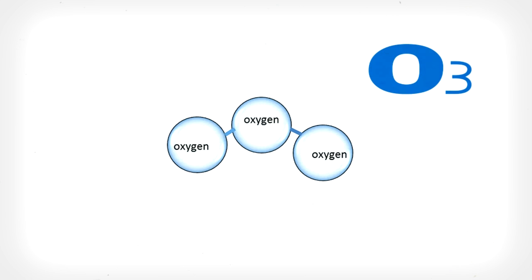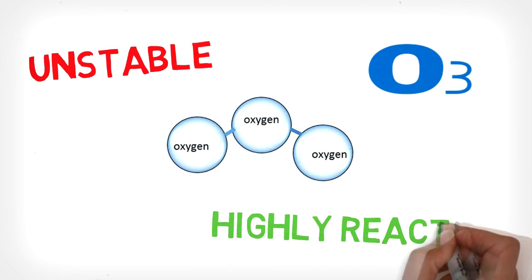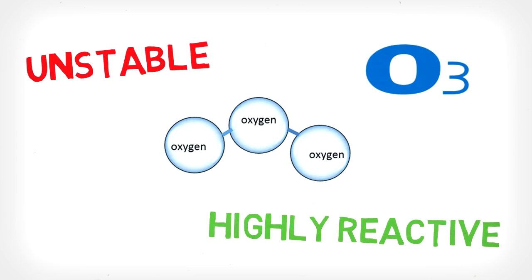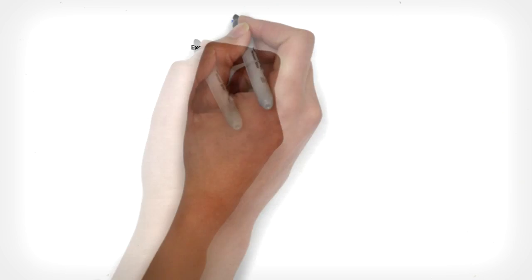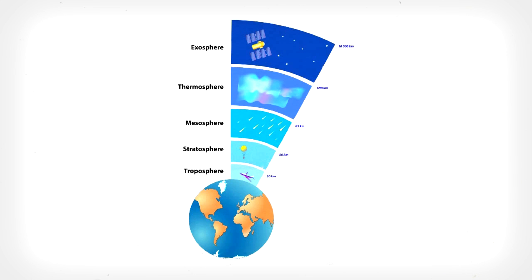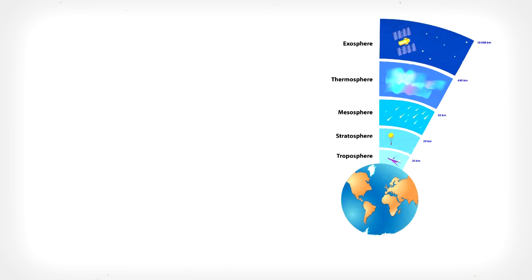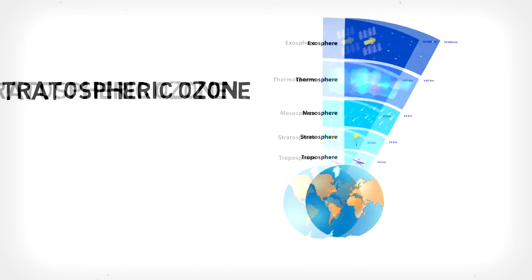Ozone is a molecule of three oxygen atoms bonded together. The molecule is unstable and highly reactive. Ozone is found naturally in small concentrations in the stratosphere, which is a layer of Earth's upper atmosphere. Therefore, they are called stratospheric ozone.